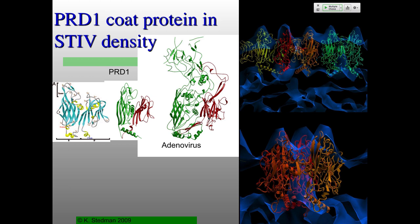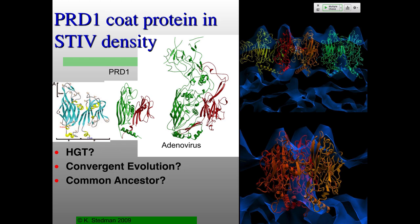What does this mean? Could be horizontal gene transfer — a definite possibility, but we think it's unlikely. Convergent evolution is another possibility — we've got icosahedrally symmetric particles, so there's a geometric constraint. But we know there are other ways to make icosahedrally symmetric particles. We like to think these viruses are descended from a common ancestor. We tried to publish in Science and Nature, they didn't like it, so we published in PNAS. One commentator, Roger Hendricks, compared us to Darwin — anytime you get compared to Darwin in the scientific literature, you've basically made it as a biologist.